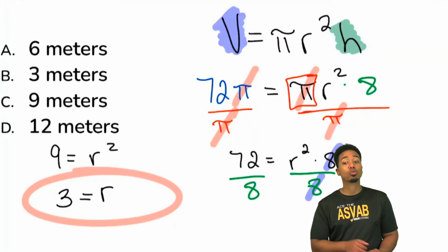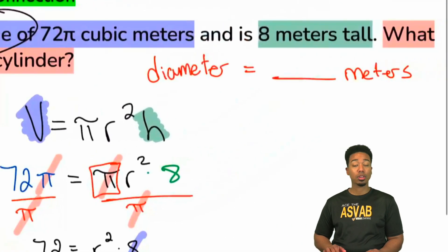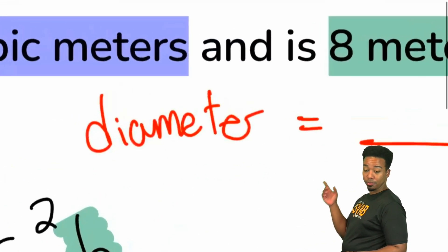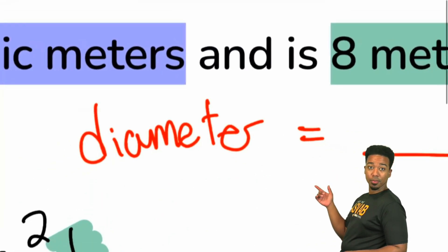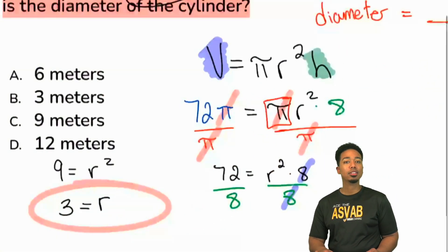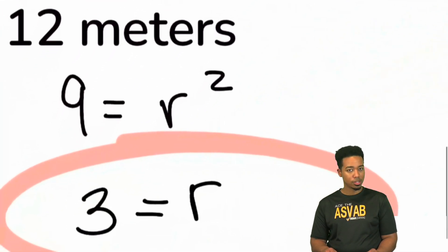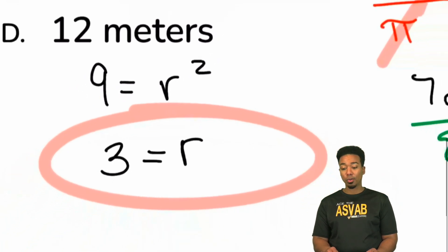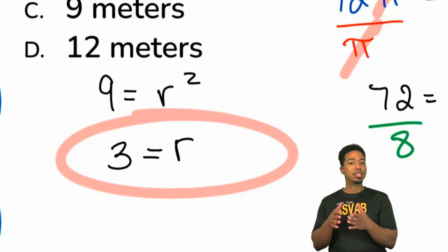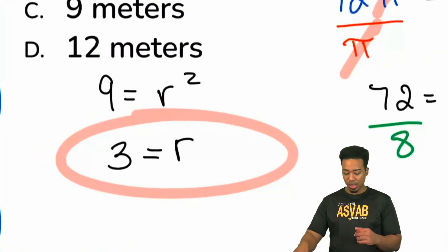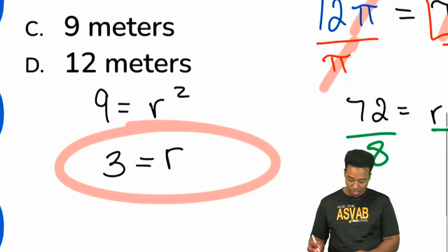We're not. Because remember, what we are looking for is the diameter. We're looking for the diameter. What did we just find? We found the radius. We found r. So the question is, how do we get to the diameter from the radius? And for those of you who don't know, a quick diagram should help us out.